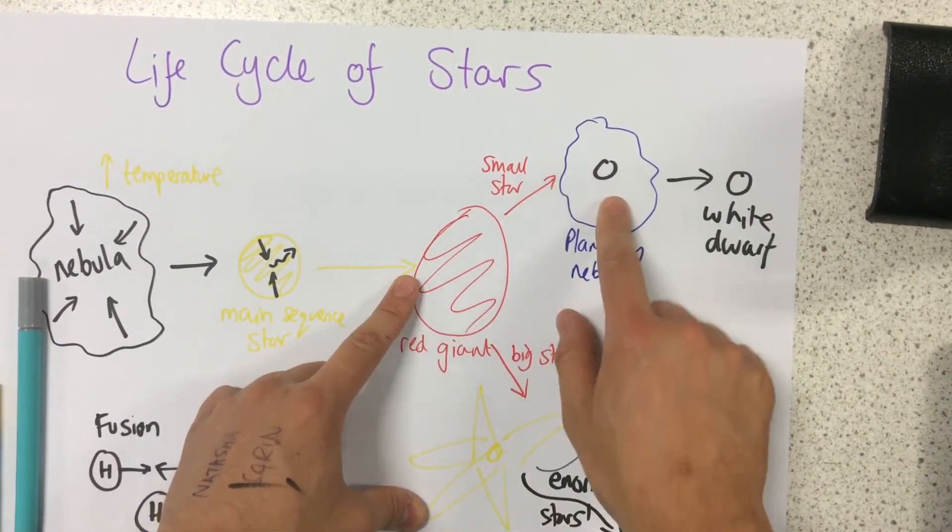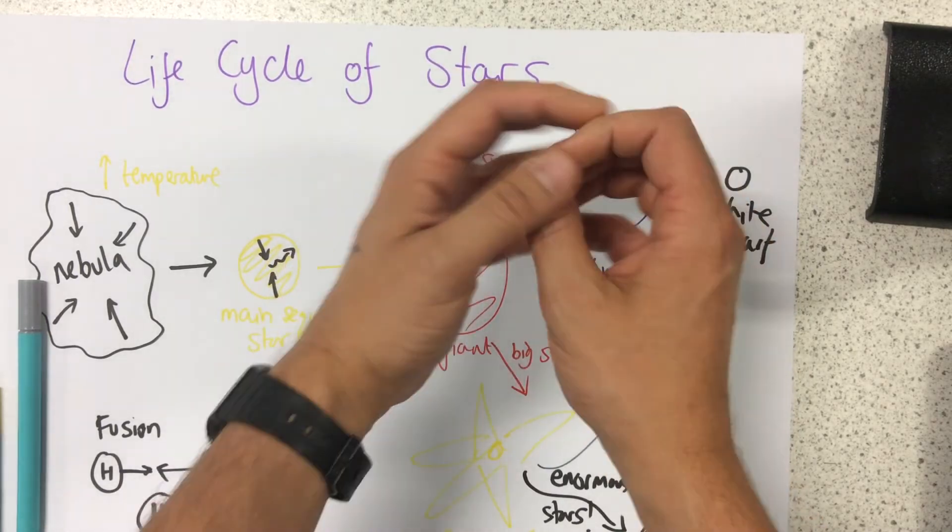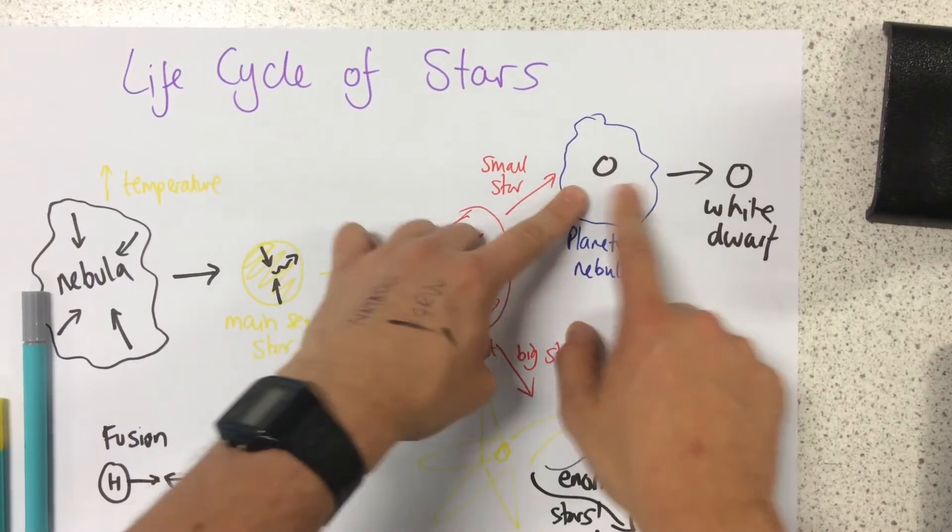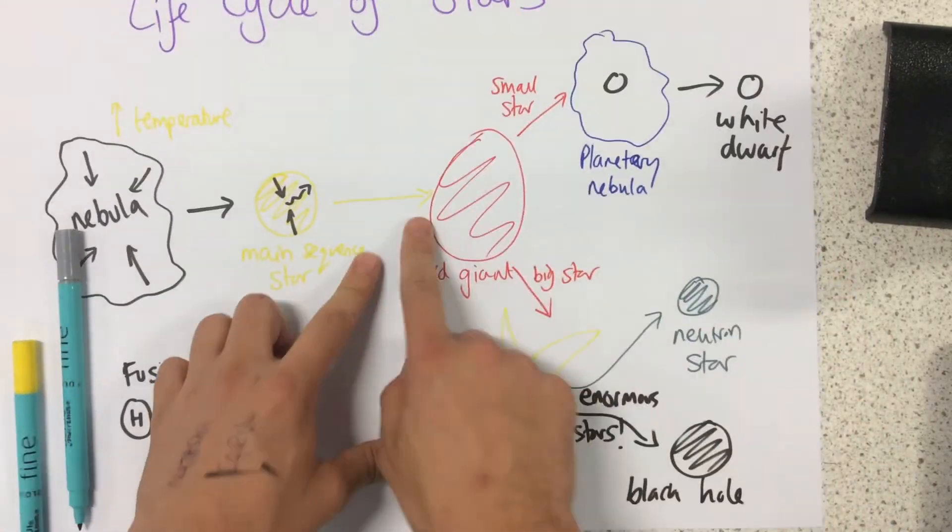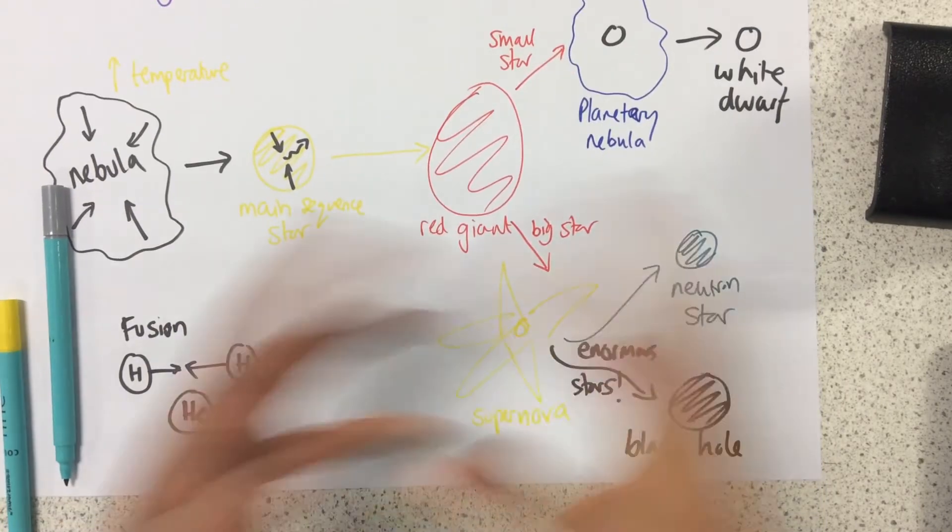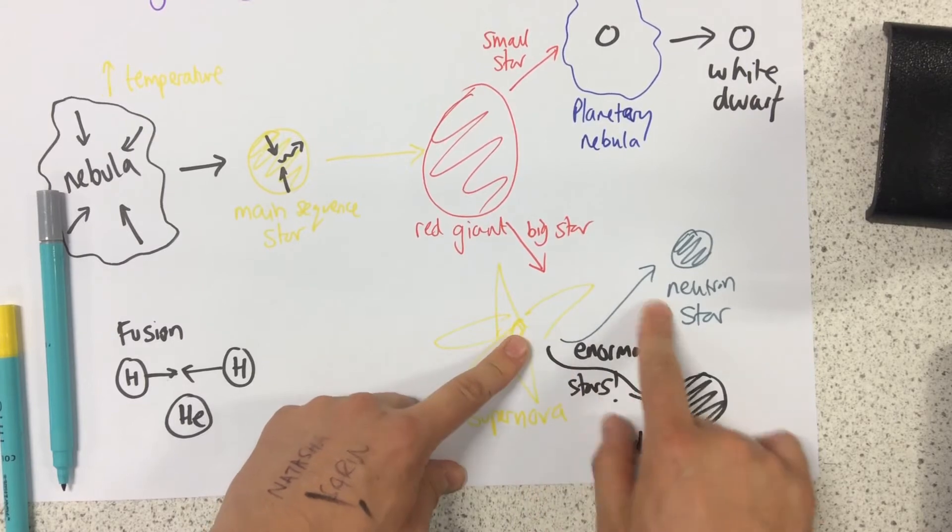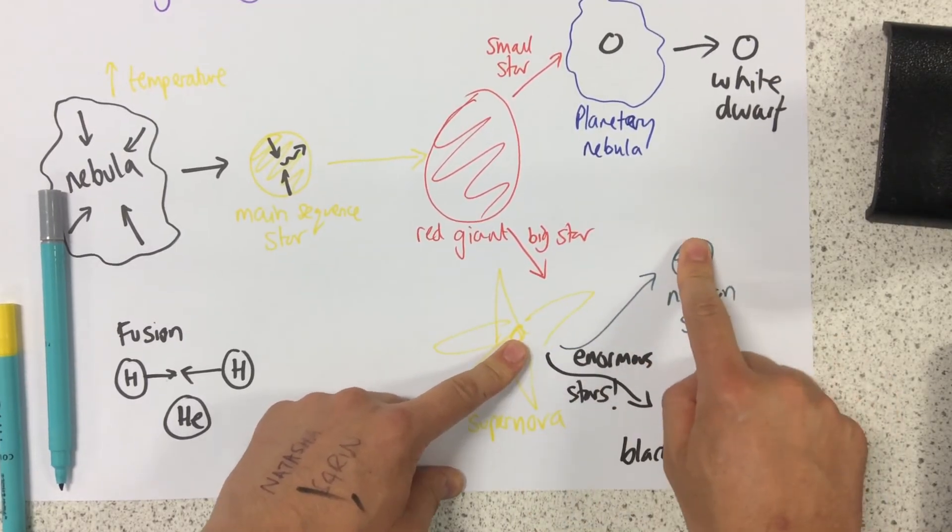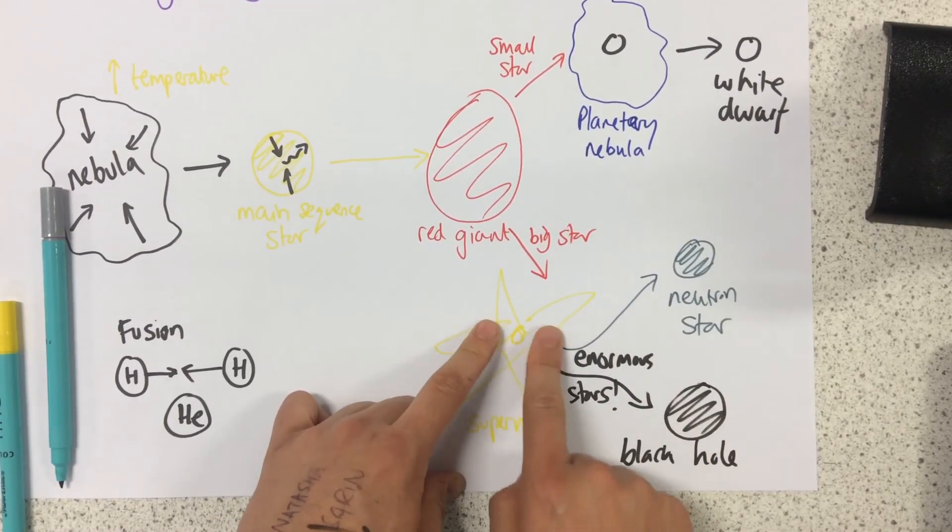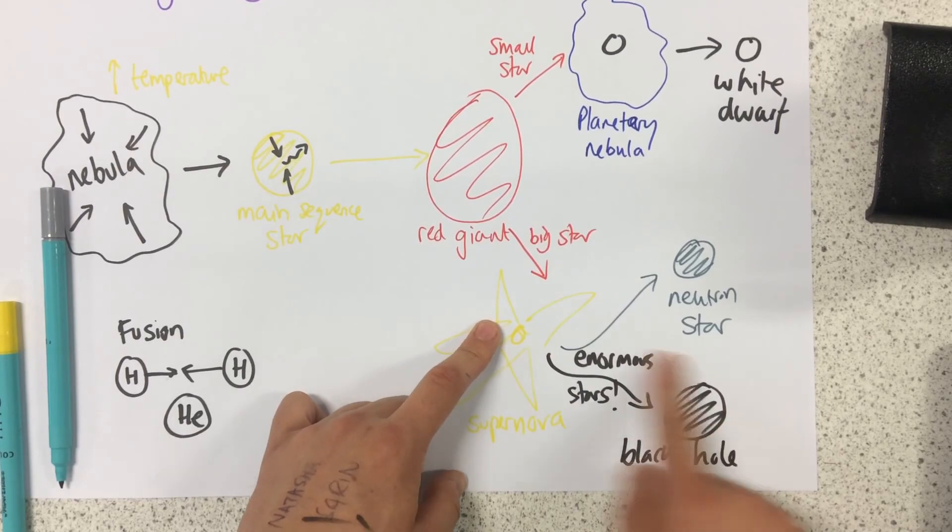If it's a small star, we then form a planetary nebula which has got a core and then some dust and gas, leaving a white dwarf at the end. If it's a big star, then we get a supernova releasing loads of energy. We then have two different fates: either a neutron star which is just a dense core, or if it's an enormous star we form a black hole.